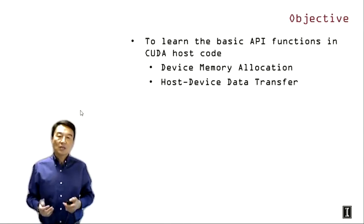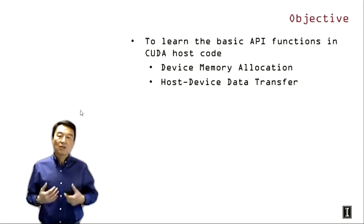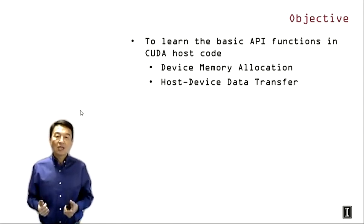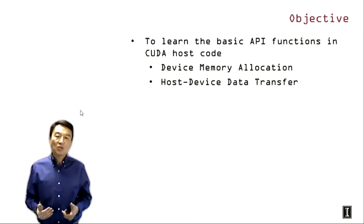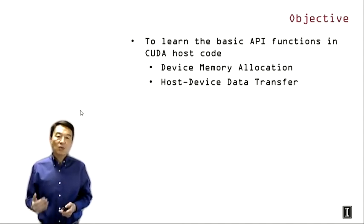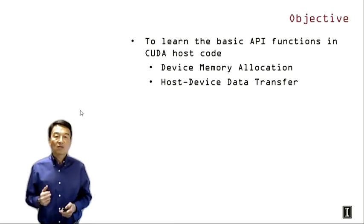API functions are a standard way for industry to extend standard programming languages to support certain specialized functionalities. In this case, the CUDA designers at NVIDIA provided these API functions to help C programmers use throughput-oriented devices such as GPUs in a heterogeneous computing system. The two types of API functions we will be looking at today are device memory allocation functions and host-device data transfer functions.